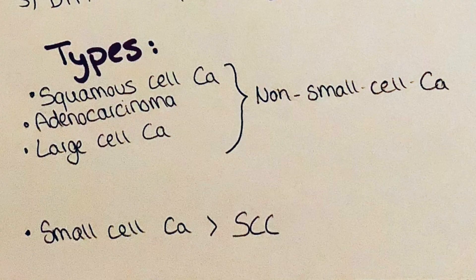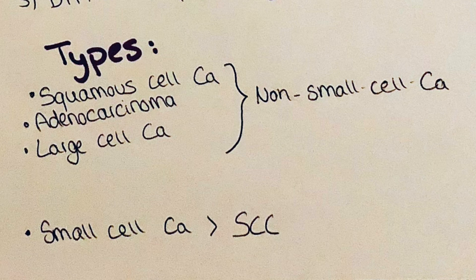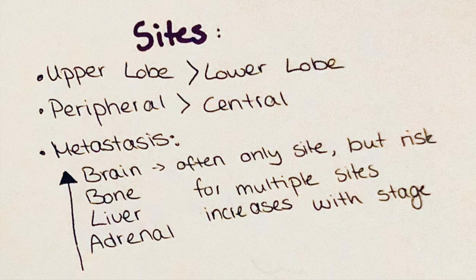We differentiate lung cancer types into being either small cell carcinoma or non-small cell carcinoma. Around 80% of cases are non-small cell carcinoma, and types of non-small cell carcinomas are squamous cell carcinoma, adenocarcinoma, and large cell carcinoma. The treatment and prognosis of these non-small cell carcinomas are similar, which is why they're grouped together. On the other side, small cell carcinomas tend to spread faster, are more aggressive, often have a worse prognosis, and are often not discovered until after metastasis. Lung tumors can occur in the whole lung, but statistics show that they tend to aggravate in the upper lobe rather than the lower, and more commonly in the periphery than centrally.